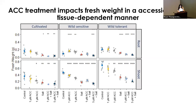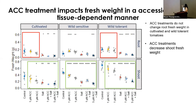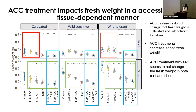Here I have a graph of fresh weight for the ACC treatment. ACC treatment did not change root fresh weight in cultivated and wild-tolerant tomatoes. However, in the wild-sensitive, ACC actually increased fresh weight compared to the control. We can also see that ACC treatment decreased shoot fresh weight. Overall, this graph shows that ACC treatment impacts fresh weight in an accession- and tissue-dependent manner.